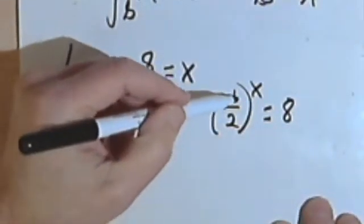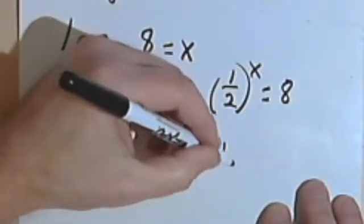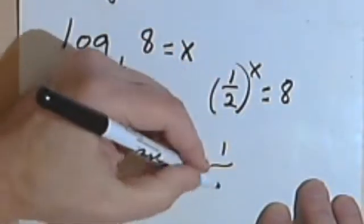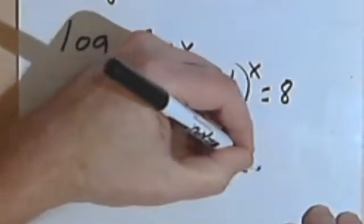Okay, so let's deal with this 1 half to the x power first. Well, 1 to the x is just 1, and 2 to the x is 2 to the x. And that equals 8.